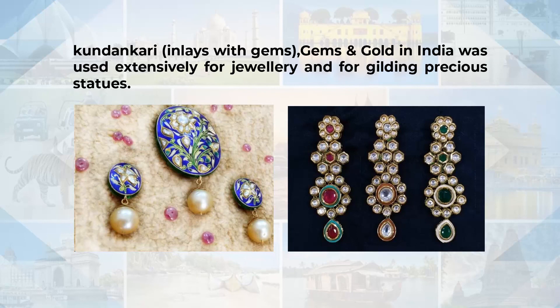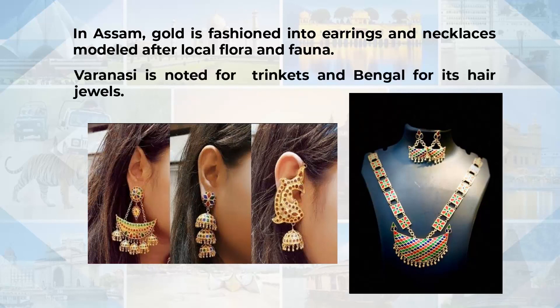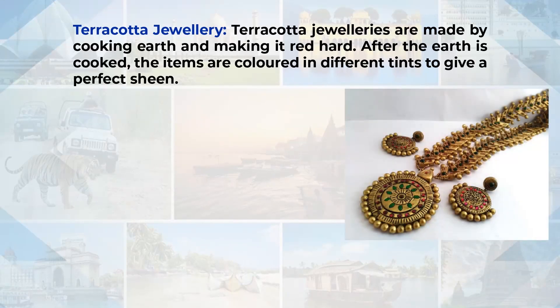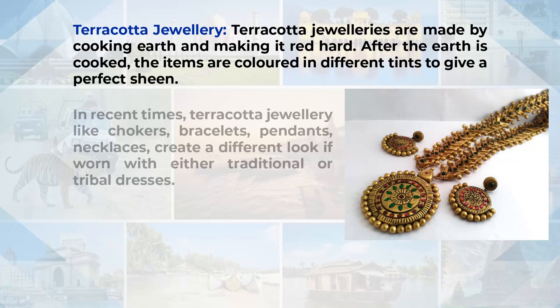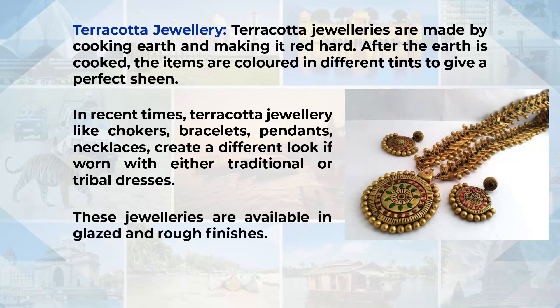Gems and gold in India were used extensively for jewelry and for gilding precious statues. In Assam, gold is fashioned into earrings and necklaces modeled over local flora and fauna. Varanasi is very popular for trinkets and Bengal for its hair jewels. Terracotta jewelry is also very popular, made of cooked earth made red and hard, then colored in different tints to give a perfect sheen. Terracotta jewelry includes chokers, bracelets, pendants and necklaces, available in glazed and rough finishes. Ladakhi jewelry of amber, coral and turquoise is also very popular.